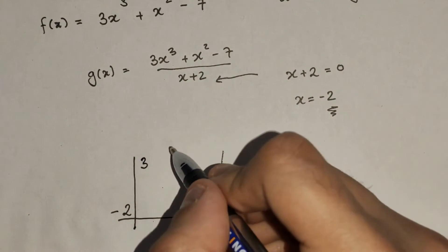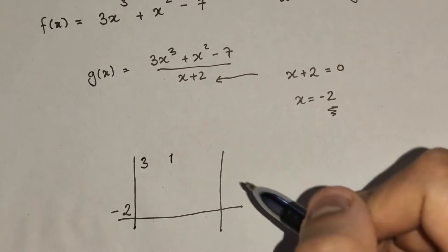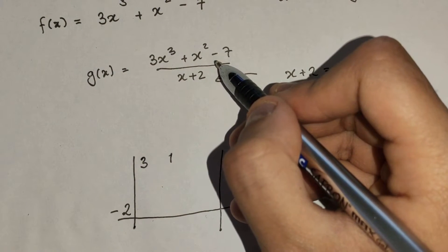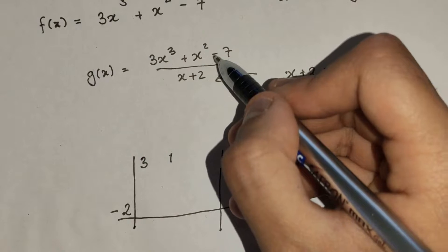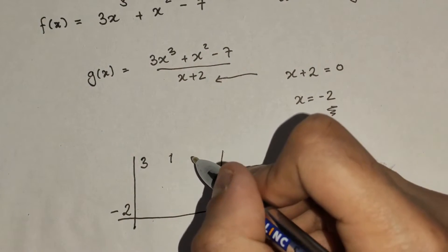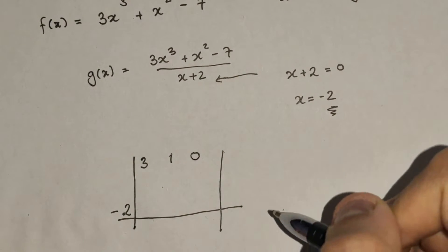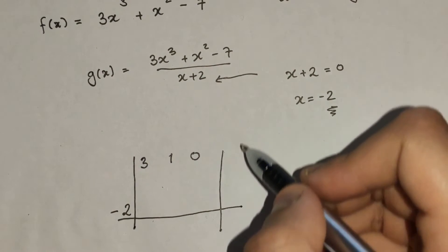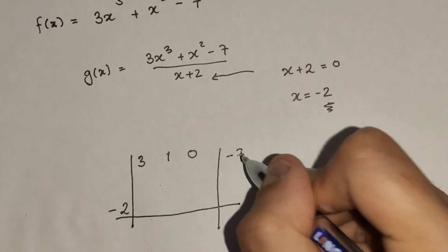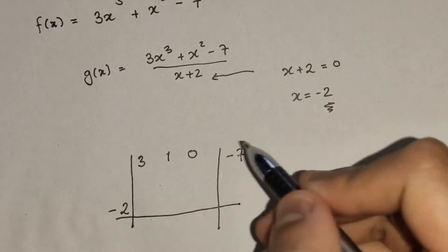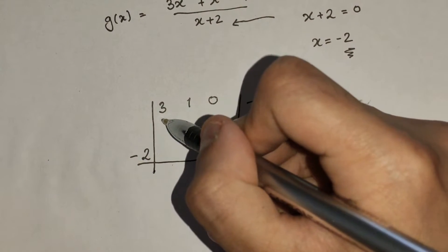So, 3x cubed, 1x squared. Note that there is no x variable to the power of 1, so I'll just write 0. And the constant here will go over here on this side. Now, I just use this grid here because it's convenient.